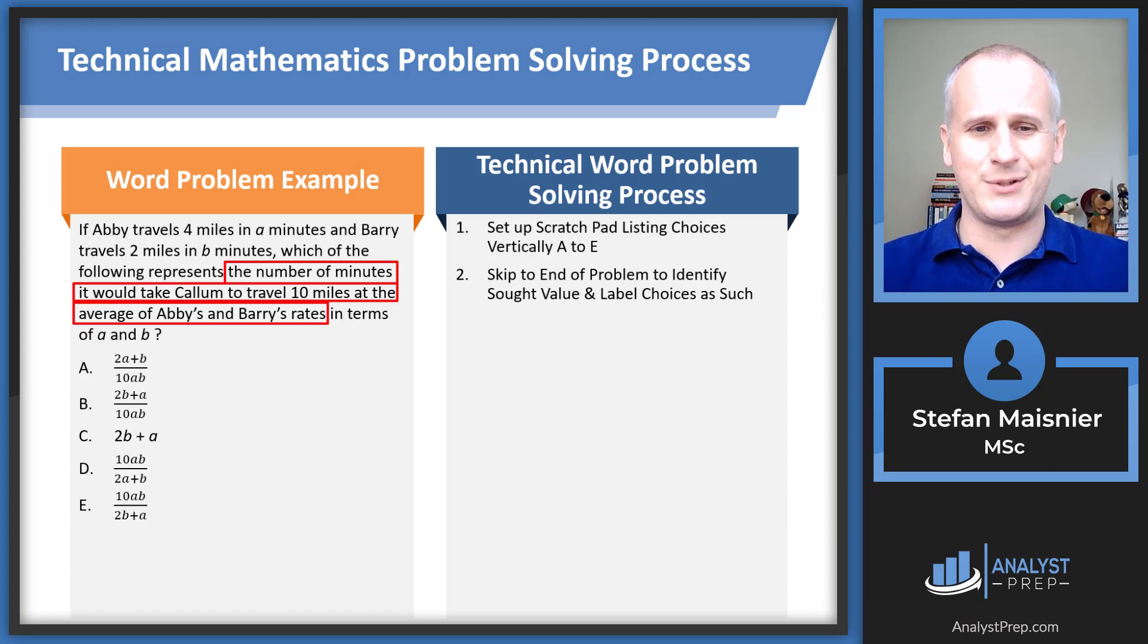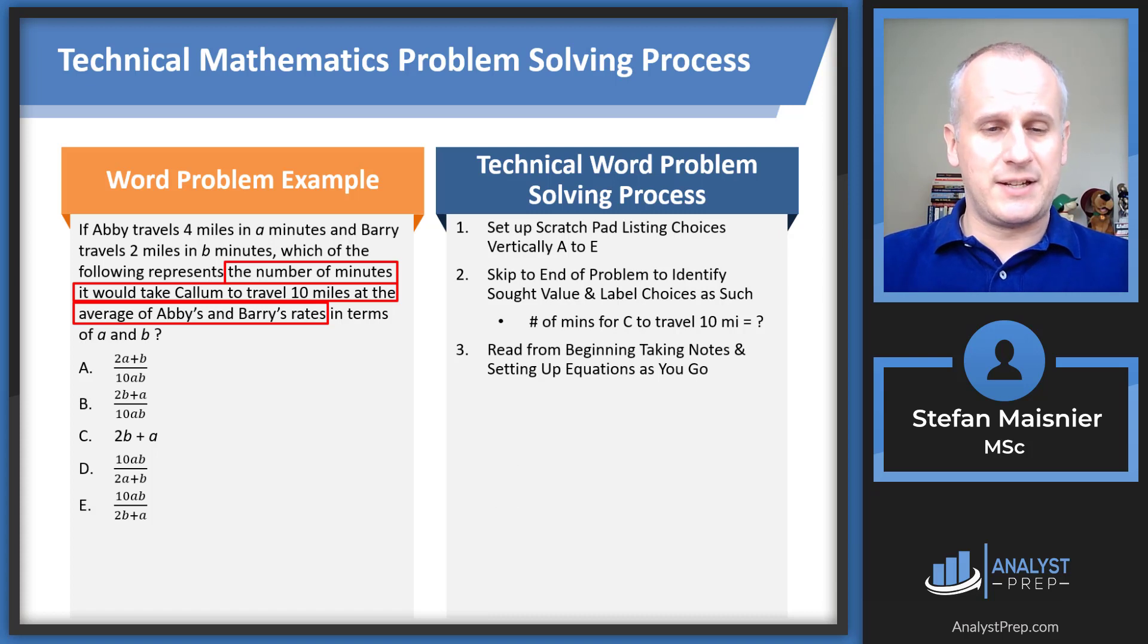In this case, we're being asked for the number of minutes it would take Callum to travel 10 miles at the average of Abby's and Barry's rates. So the number of minutes for C, and we've just turned Callum into C, to travel 10 miles. Then you want to read from the beginning, taking notes, and setting up equations as you go, because you can see in your answer choices that they're looking for an algebraic expression as the solution.